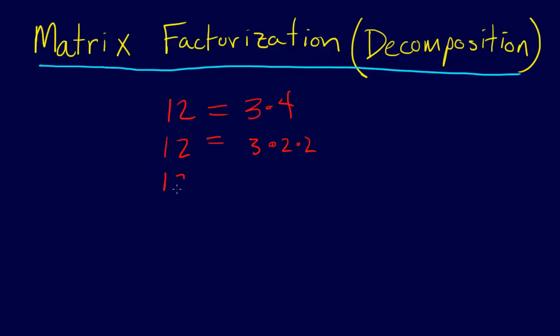It could be 12 equals 2 times 6, right? So here are a few different factorizations of the number 12, or decompositions. This is another way of saying the same thing. Well, we actually do the same thing in linear algebra all the time.